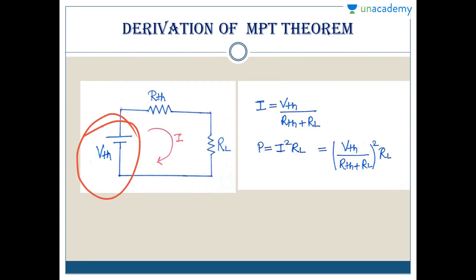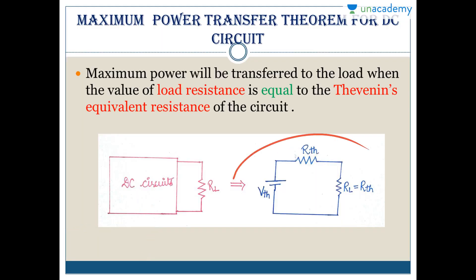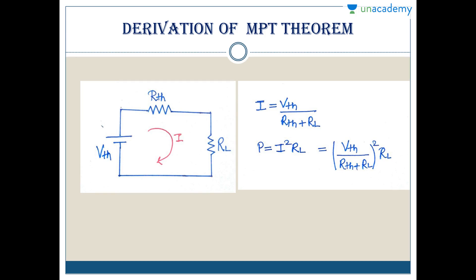What is the derivation of MPT - Maximum Power Transfer Theorem? We need to convert into the Thevenin structure, and load resistance should equal RTH. Here we have our Thevenin structure. To find current: I equals VTH divided by RTH plus RL. The power in terms of current and resistance: P equals I squared RL. Substituting the current value, you get P equals VTH squared RL divided by RTH plus RL whole squared.